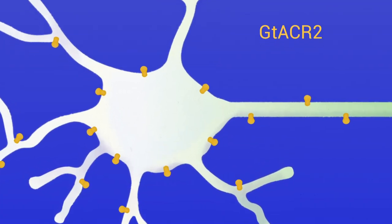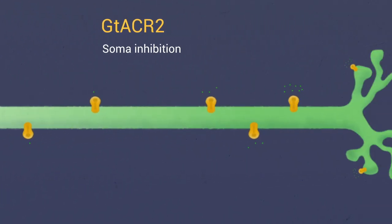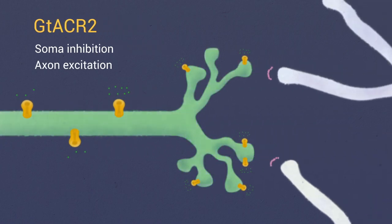We found that GT-ACR2 activation inhibits the soma, but unexpectedly also causes axon excitation.